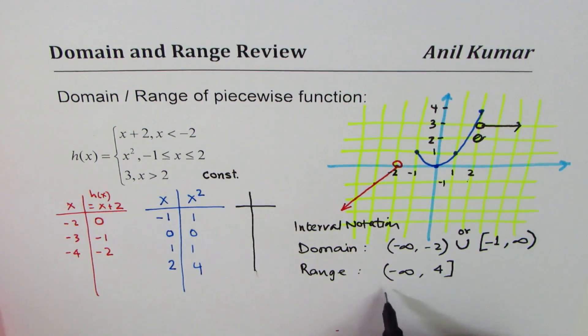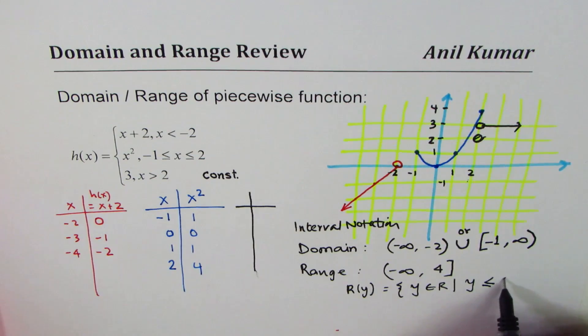You could have written range as the range is equal to y belongs to real numbers so that y is less than or equal to 4. So that is the set notation in which you could have written the range. In different notations, you can write domain and range. I prefer to write it in interval notation in this particular video.